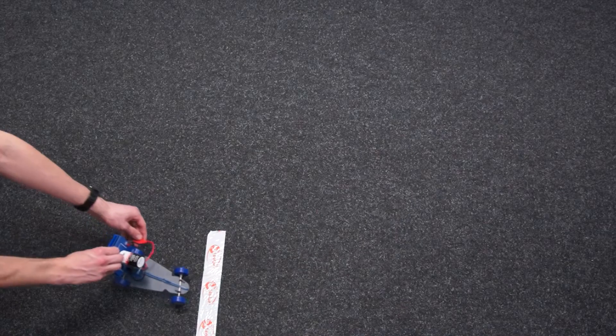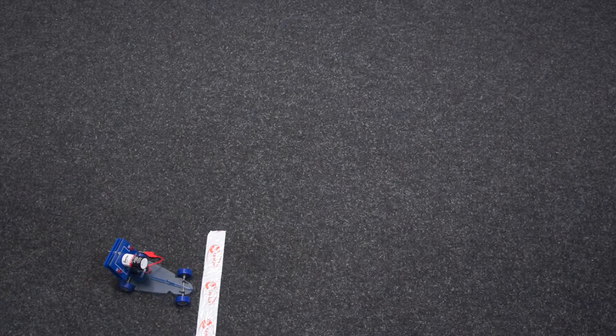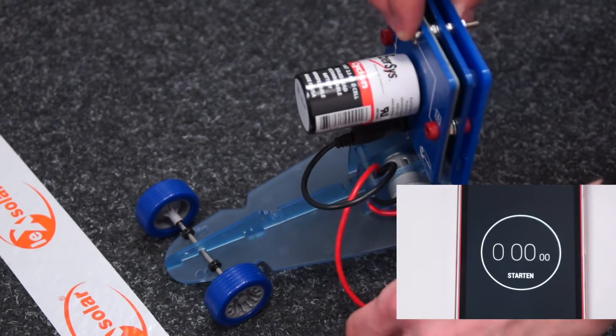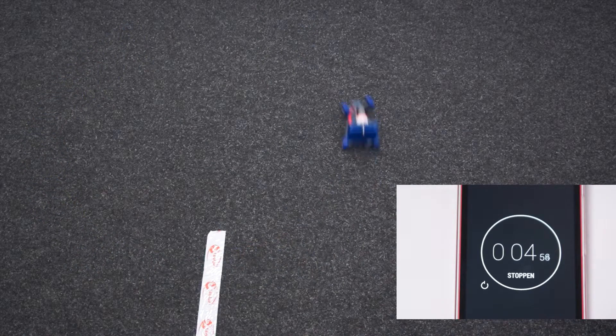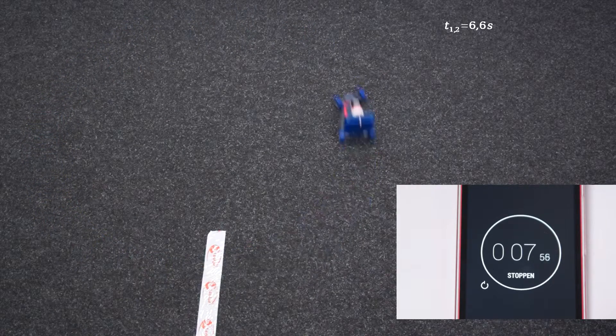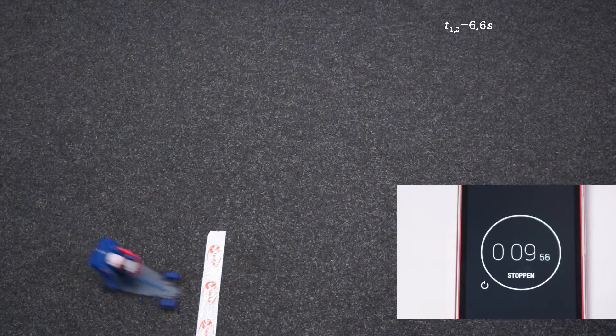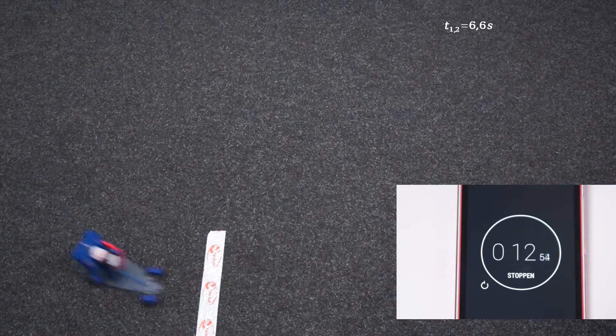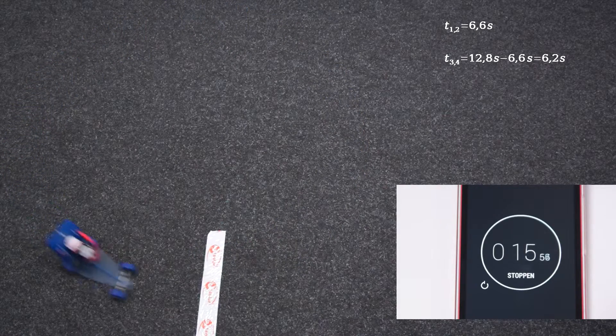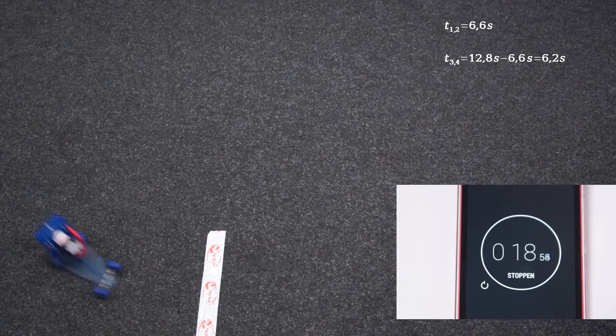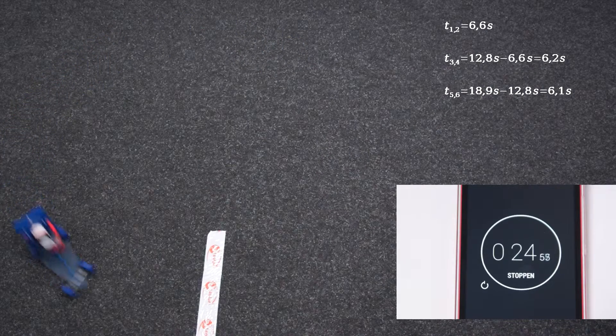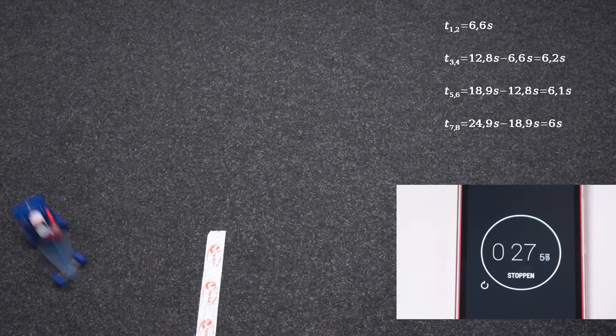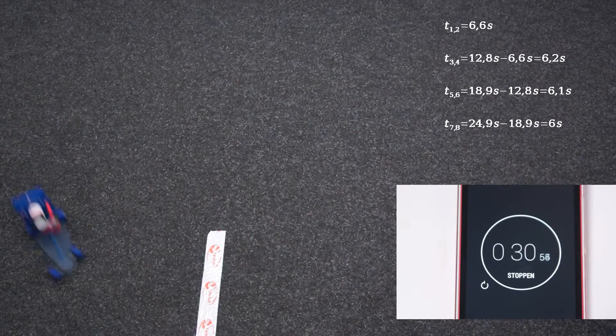When the start line is ready, we prepare the timing and put the car on the line. Then we lift the car a little bit, secure the second cable to the battery, and immediately start the timing and the car. During the experiment, we record the time for every two rounds. Since the car is not slowing down, we end the test after ten rounds and pull the red wire out again.